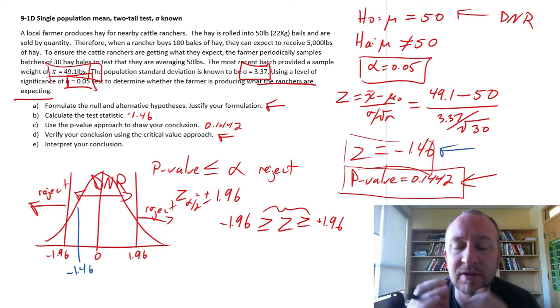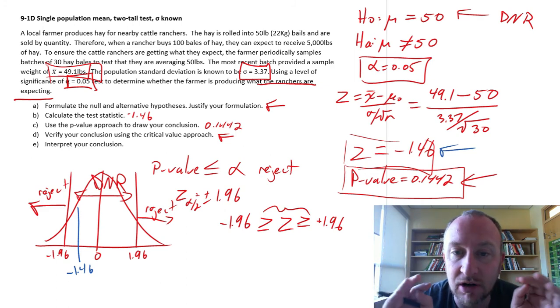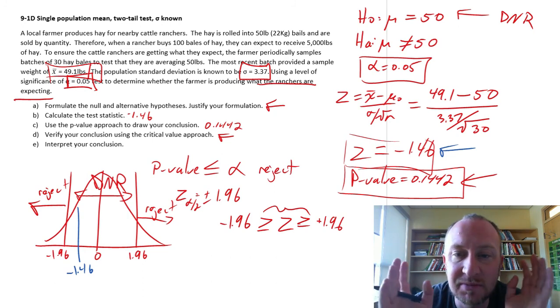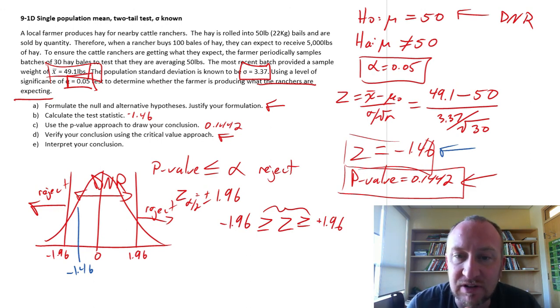So, that's consistent with our results that we obtained using the p-value approach as it should always be. So, we're good. Our evidence supports the null hypotheses. We appear to be operating on spec, where we're meeting our objective 50 pounds in a bale of hay.